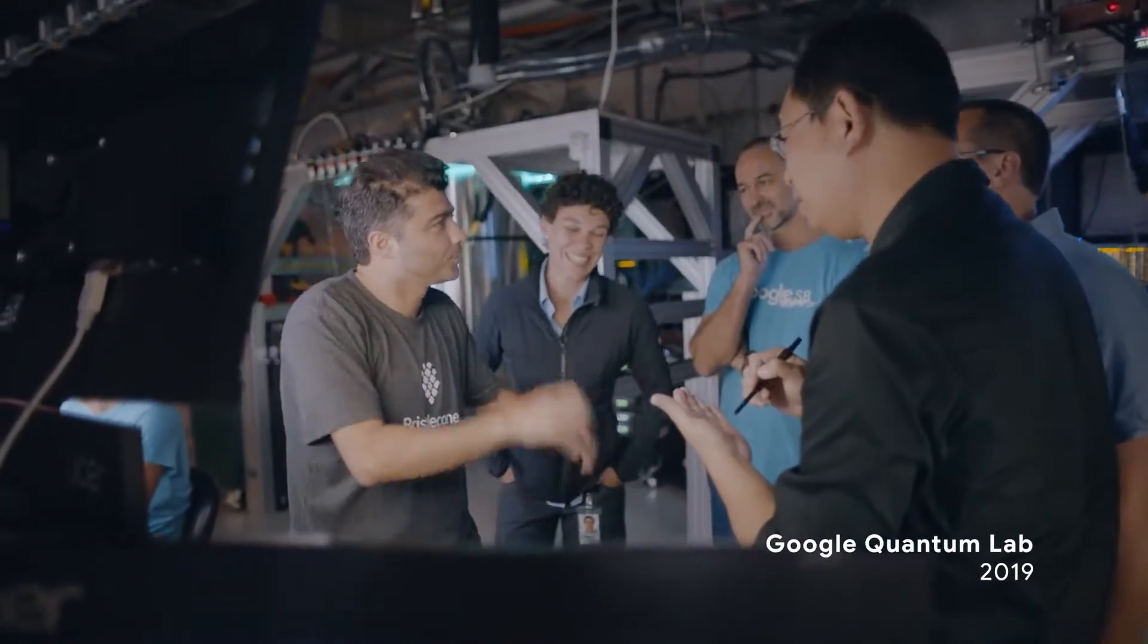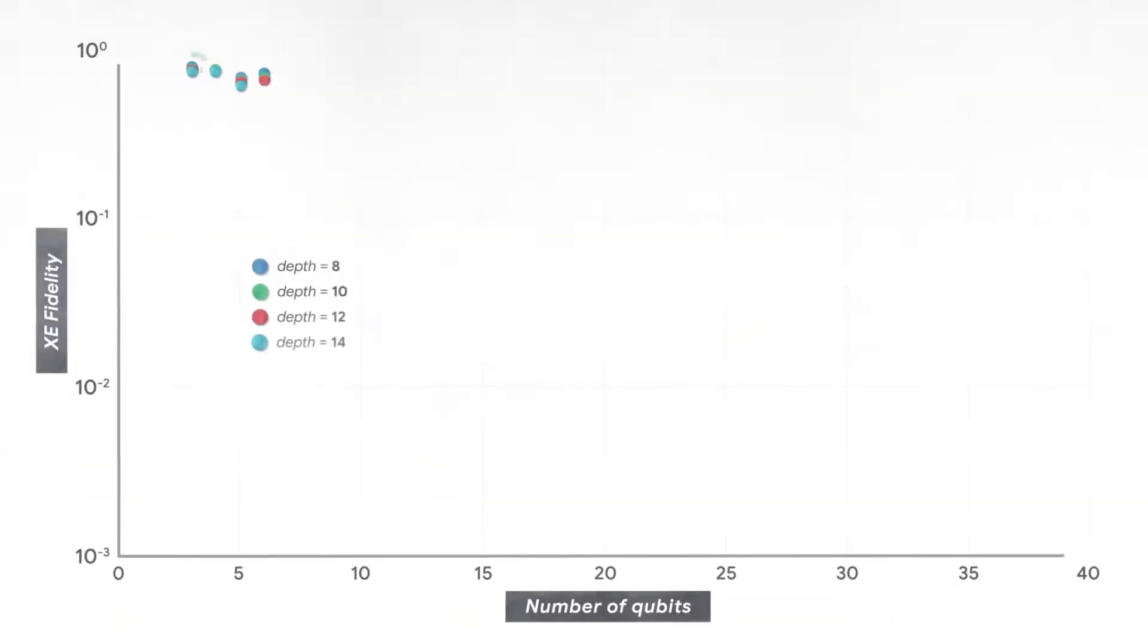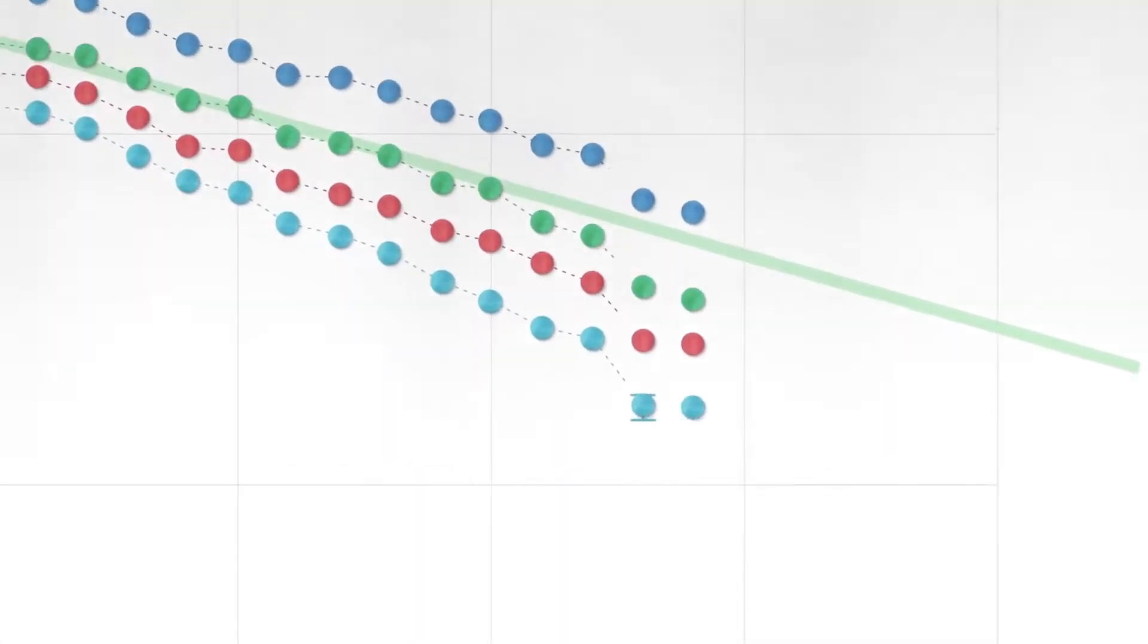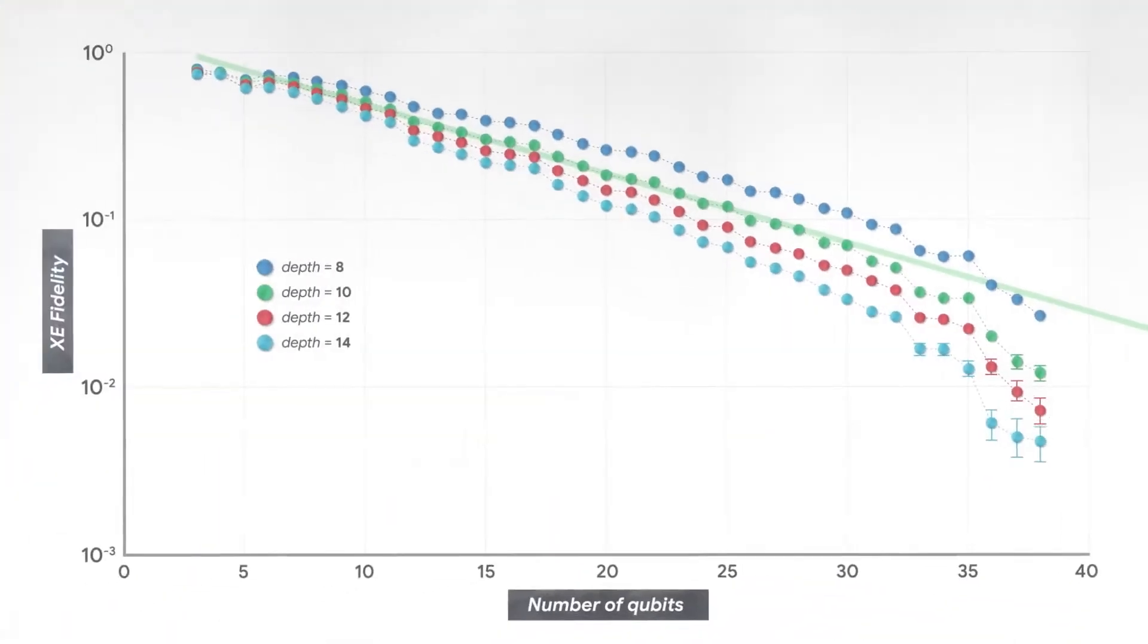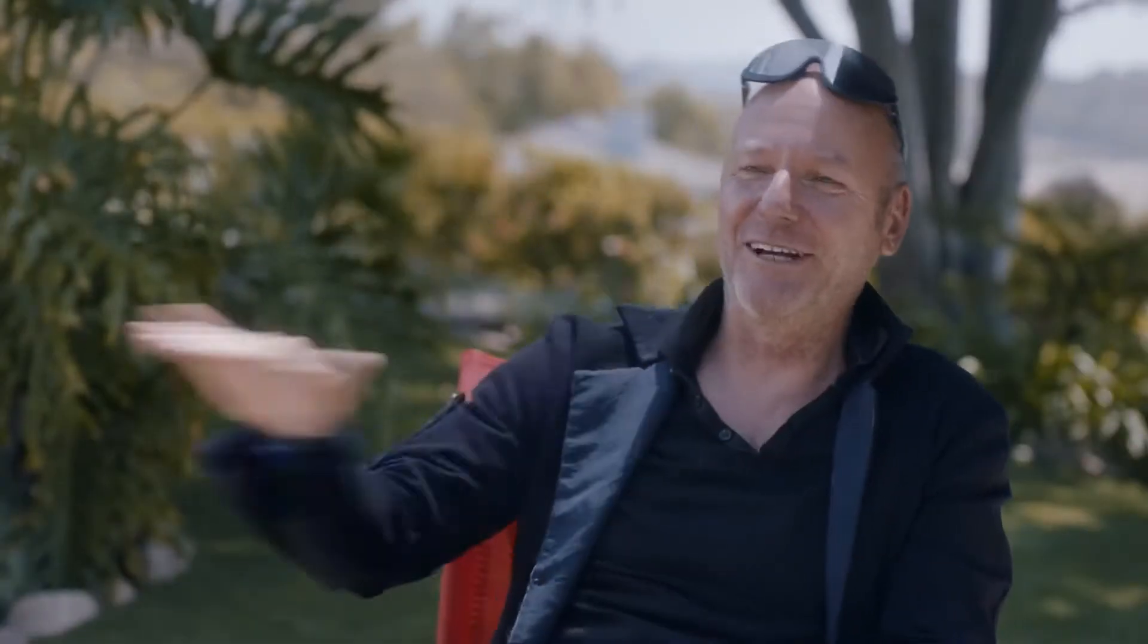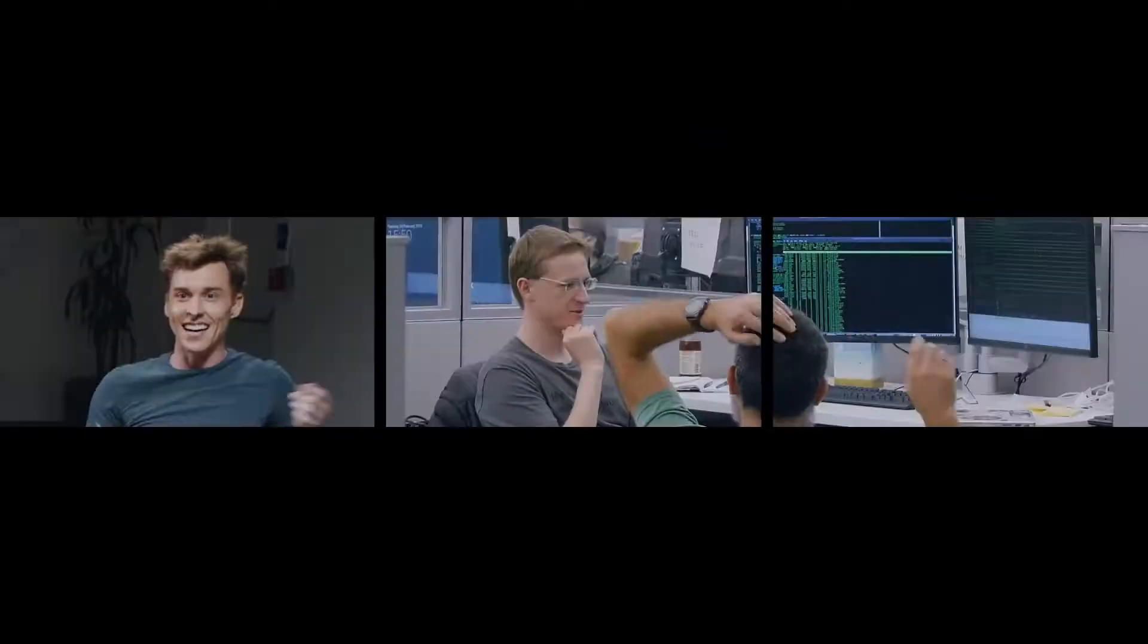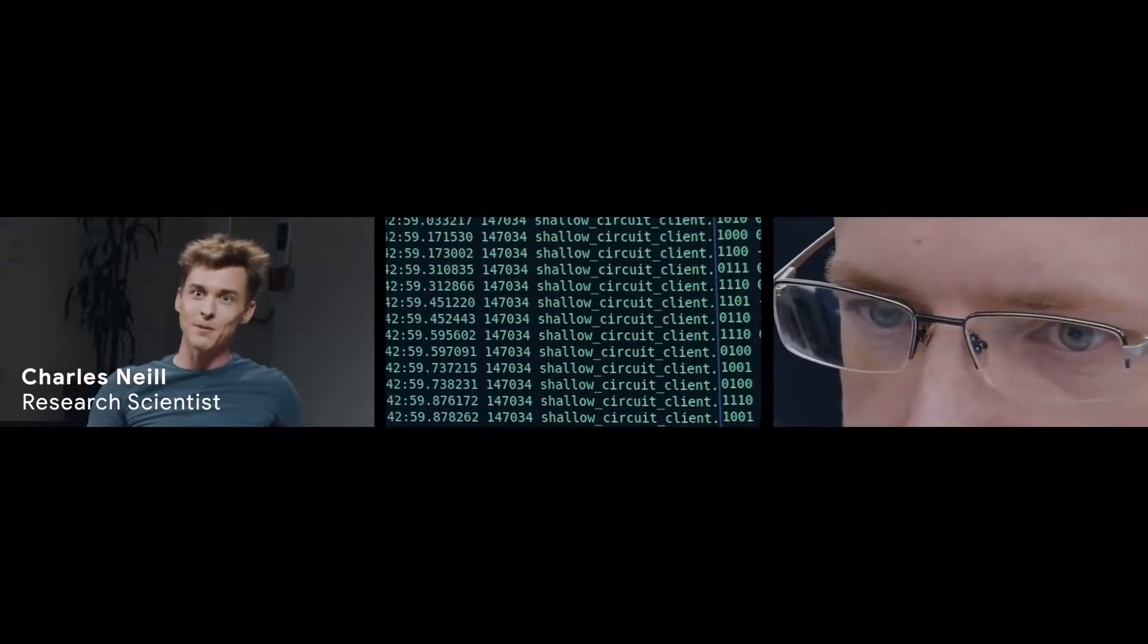When the experiment started we were getting data from the experimentalists. We saw initially a beautiful straight line corresponding to our predictions. Then right before we hit supremacy it dropped much faster and fell below the threshold where it needed to be. And there's nothing we can do because we don't know how to analyze past that. So everyone's like, oh we're screwed because it's getting really really bad at large number of qubits. Maybe there's some really complex interaction between all the qubits.